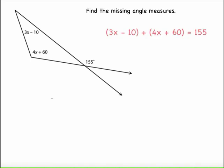I'm still going to set it up like we did before. 3x plus 10 plus 4x plus 60 has to equal our exterior angle of 155. I'm going to combine like terms. I'm going to subtract 50 from both sides, and then divide both sides by 7, and I get X equals 15.